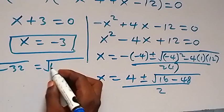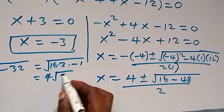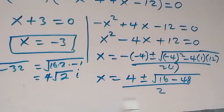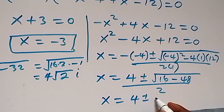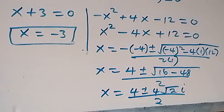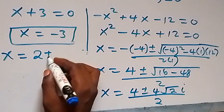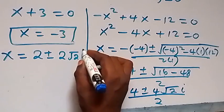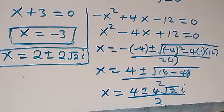The square root of minus 32 can be written as the square root of 16 times 2 times minus 1. The square root of 16 is 4, then out we have square root of 2 and square root of minus 1, that's i. So everything here is 4i√2. Therefore x equals (4 plus or minus 4i√2) divided by 2, which simplifies to x equals 2 plus or minus 2i√2. So here we have two complex solutions.